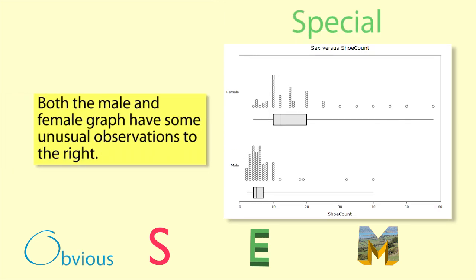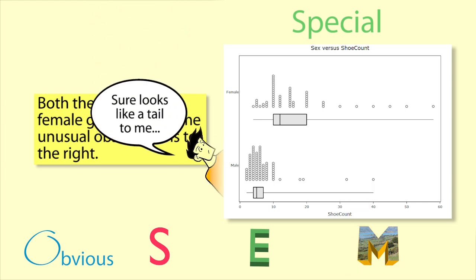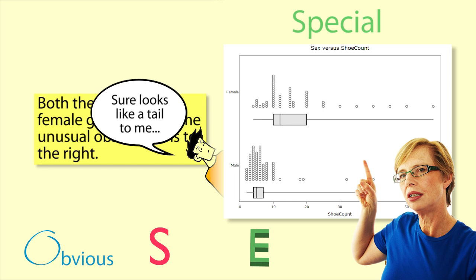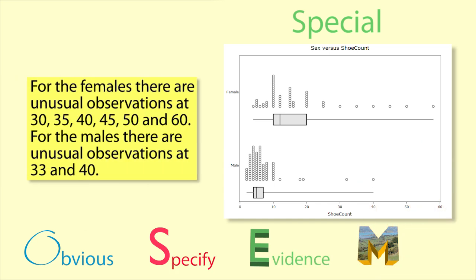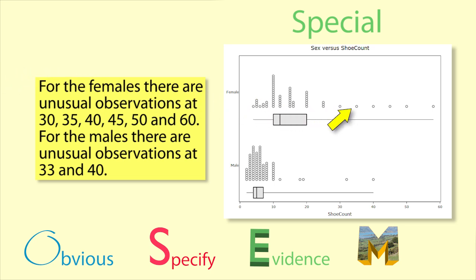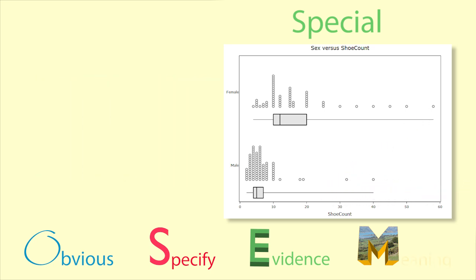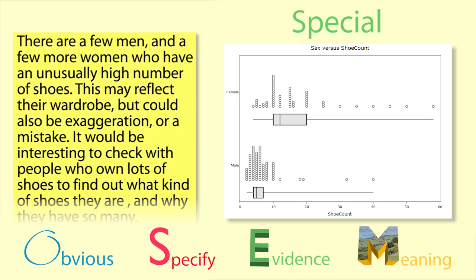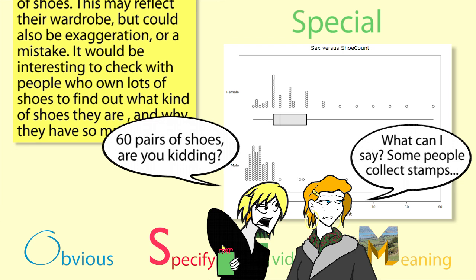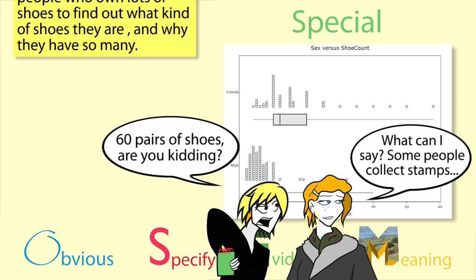Obvious — both the male and female graphs have some unusual observations to the right. Note that some people might call this a tail or skew to the right, but as there are only a few observations, particularly for the males, these are more unusual observations than skew. Specify and evidence — for the females there are unusual observations at 30, 35, 40, 45, 50, and 60. For the males there are unusual observations at 33 and 40. Meaning — there are a few men and a few more women who have an unusually high number of shoes. This may reflect their wardrobe but could also be an exaggeration or a mistake. It would be interesting to check with people who say they own lots of shoes to find out what kind of shoes they are and why they have so many.